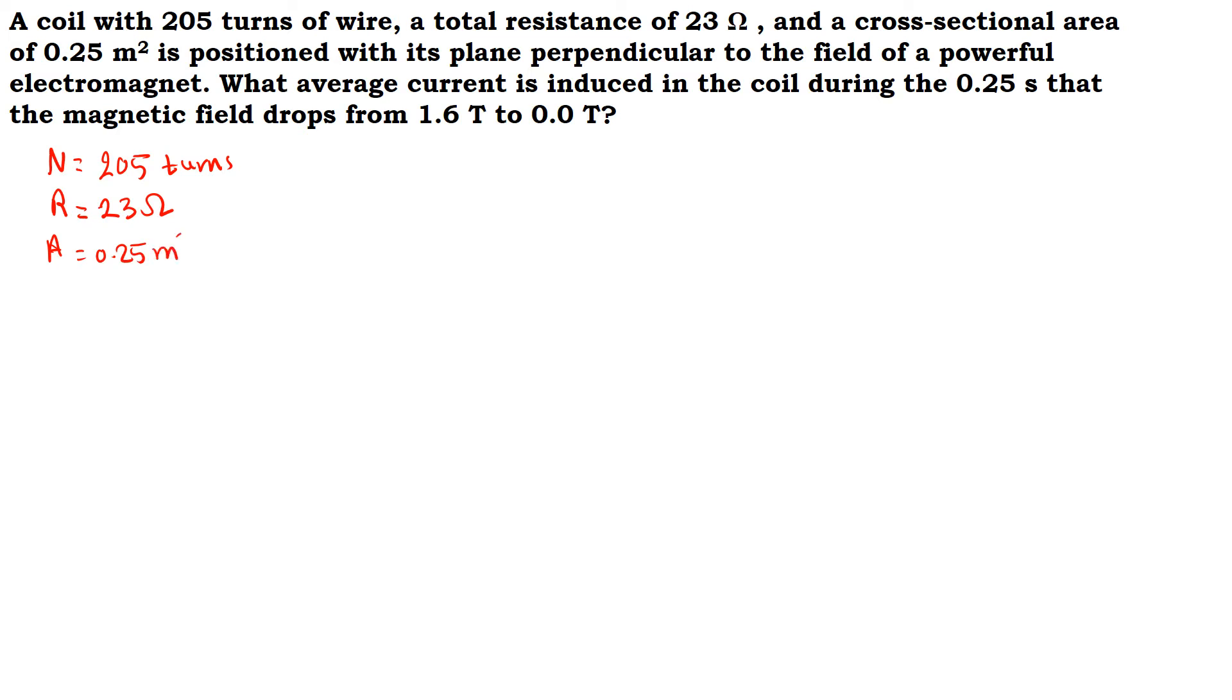The cross-sectional area is 0.25 square meters. It is positioned with its plane perpendicular to the field of a powerful electromagnet. Let's assume that this is the coil, its plane is perpendicular to a field, so this is the field. If we draw the normal line to the coil it will be like this, so the normal line and the magnetic field are parallel to each other.